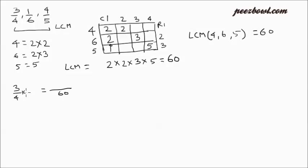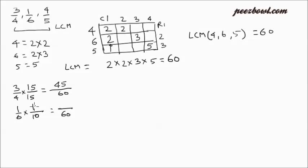So we need to multiply the denominator of 3 upon 4 with 15 so that the denominator becomes 60. As we multiply the denominator with 15, we need to multiply the numerator with 15 also. So the final value is 45 upon 60. For 1 upon 6, we need the denominator as 60, so we multiply numerator and denominator with 10, giving 10 upon 60. For 4 upon 5, we multiply numerator and denominator with 12, so it is 48 upon 60.